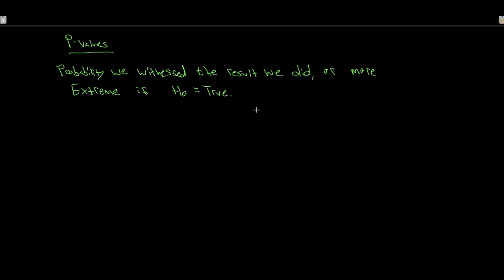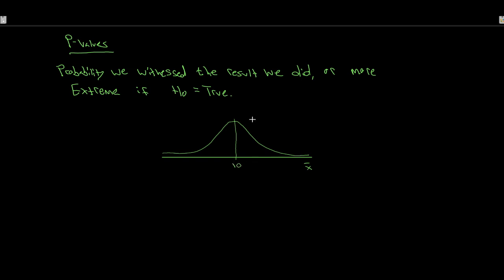Let's take a look at an example of this. Let's suppose that we have a distribution — we can appeal to the central limit theorem — x-bar, centered around our mean. Let's say that this is a mean of 10, and let's say that we have a standard deviation of x-bar equal to 25 all over root 25.